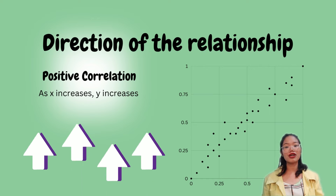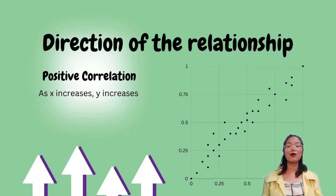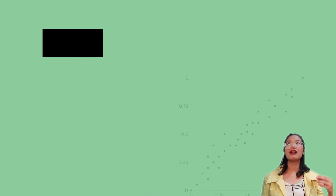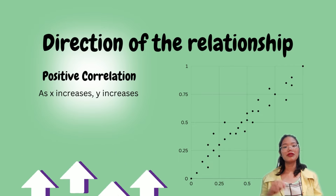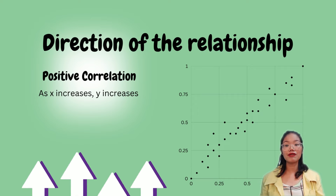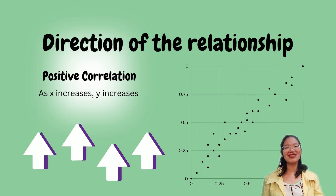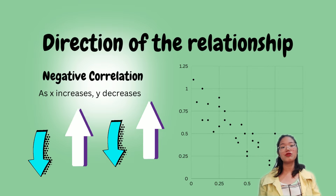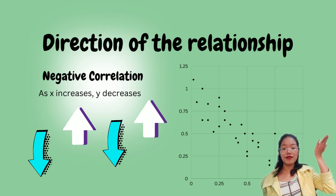An example of positive correlation: during the COVID-19 pandemic, the more people outside, the more chances the virus would spread. Or in a classroom setup, the longer you study, the higher your grade. For negative correlation, as X goes up, Y goes down — a good example is the law of supply and demand, wherein if supply is high, demand is low, or vice versa. They have an inverse relationship.